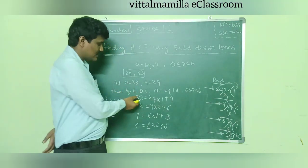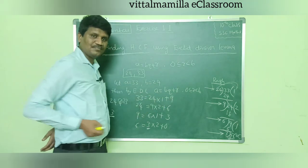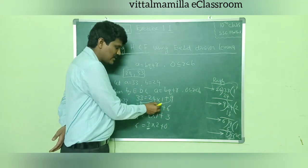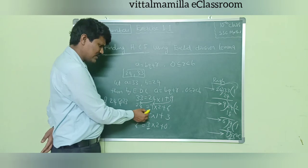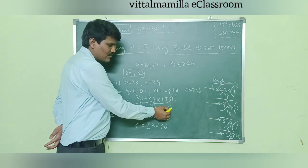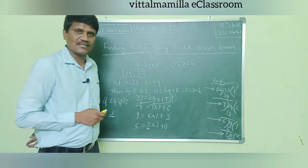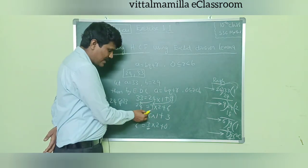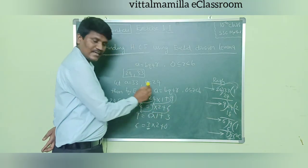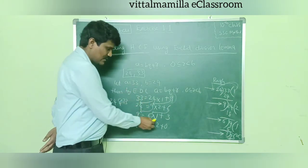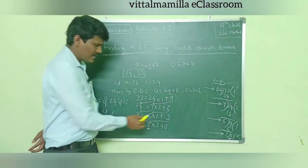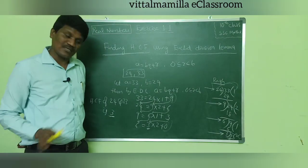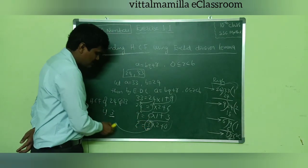To summarize the method: first, 33 = 24 × 1 + 9. Then the divisor becomes the dividend and remainder becomes the divisor. We continue until remainder comes to 0. So: 9 becomes dividend, 6 becomes divisor; then 6 becomes dividend, 3 becomes divisor; and the remainder finally becomes 0. Whenever the remainder comes to 0, we stop the process, and whatever divisor we have at that point becomes the HCF.